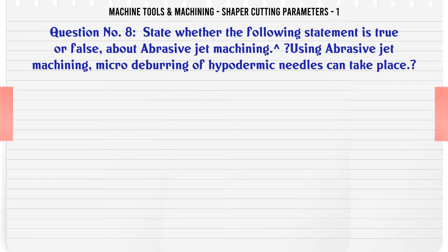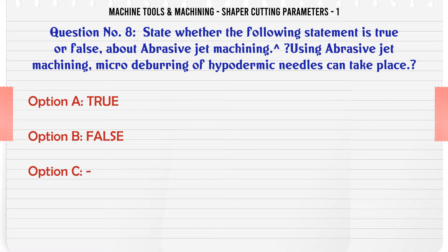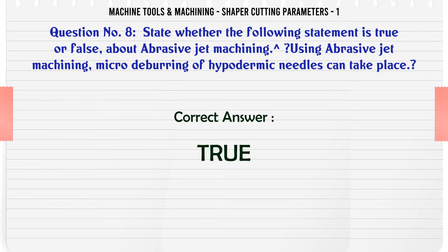State whether the following statement is true or false about abrasive jet machining: Using abrasive jet machining, micro-deburring of hypodermic needles can take place. A. True. B. False. The correct answer is: True.